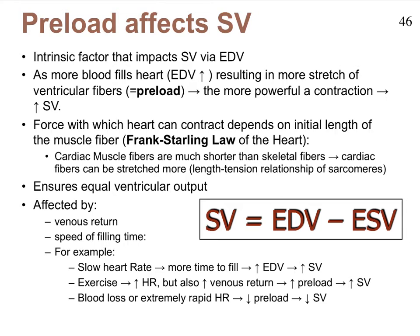The first factor we're going to discuss that affects stroke volume, we call preload. And it refers to the amount of blood that can literally stretch our muscle fibers to then initiate contraction, which results in ejection of the blood, and of course that relates to stroke volume. As more blood fills the heart to where our end diastolic volume begins to rise, we're going to stretch the fibers of the ventricles more. The more they are stretched, the more we're going to see that the muscle cells contract and the higher a stroke volume is witnessed.